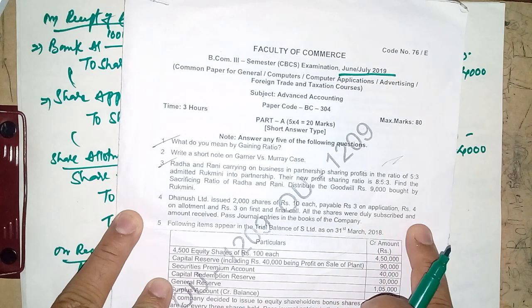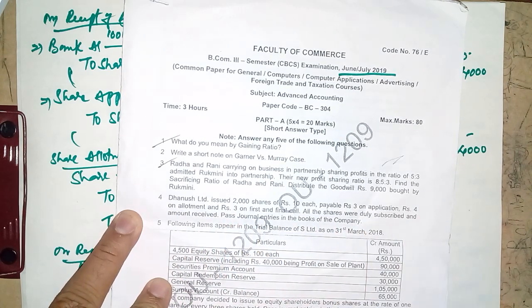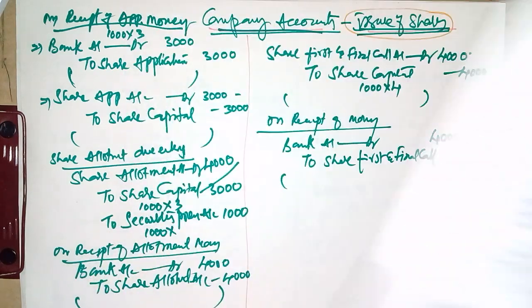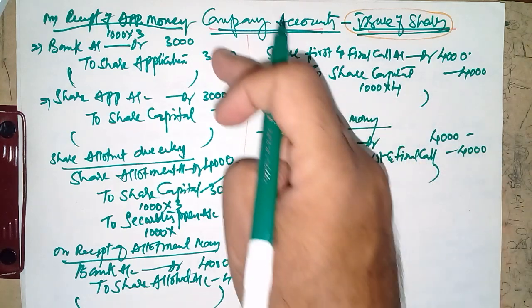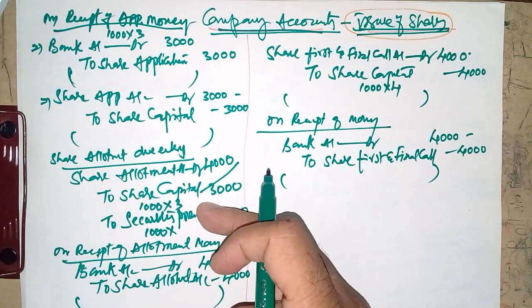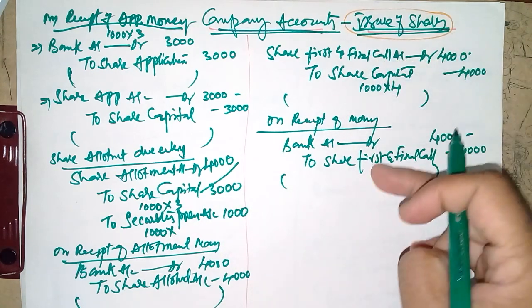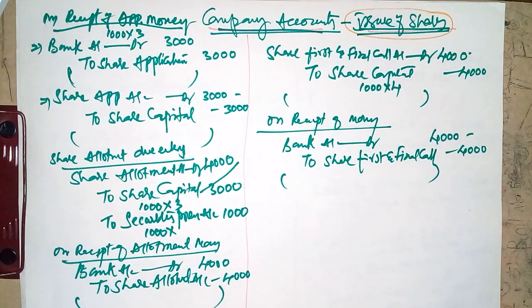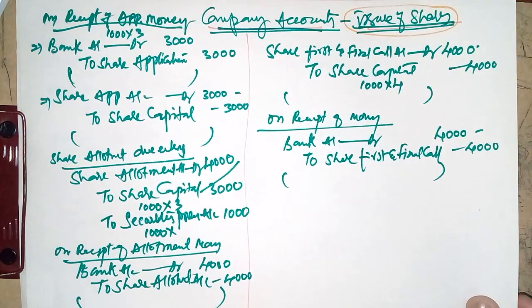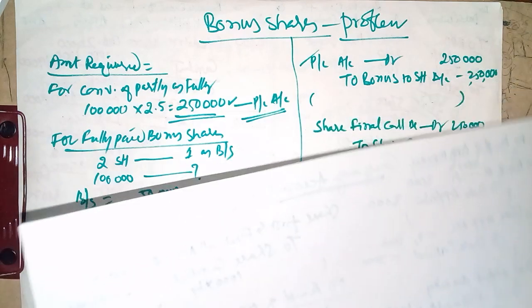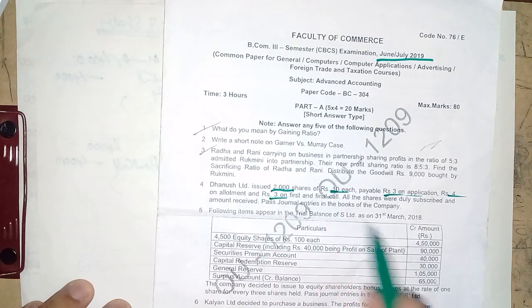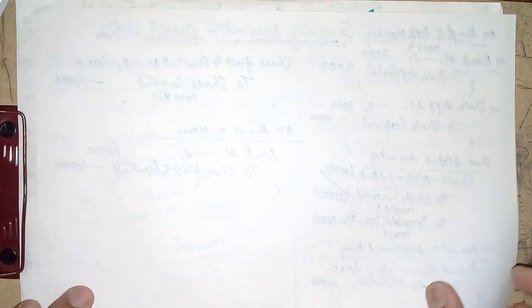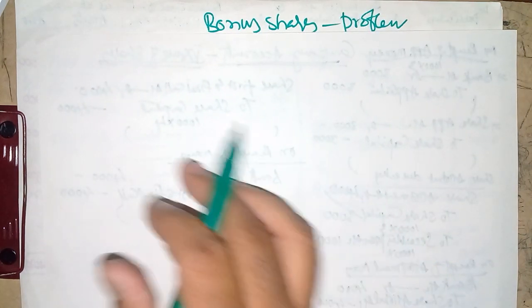All shares were duly subscribed and the amount was received. We need to pass journal entries in the books of the company. We will pass six entries in total: two for application, two for allotment, and two for first and final call. There is no premium in this question, making it very simple.